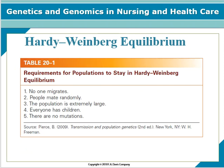The Hardy-Weinberg equilibrium: if allele frequencies were to remain stable, the population would be in Hardy-Weinberg equilibrium. Five criteria are needed to meet this. Everyone must stay in the same place; people must mate randomly — they can't pick a partner. The population must be large; everyone must have children; and there are no mutations. Preventing mutations is probably the hardest criterion to maintain, because we know mutations can occur spontaneously.